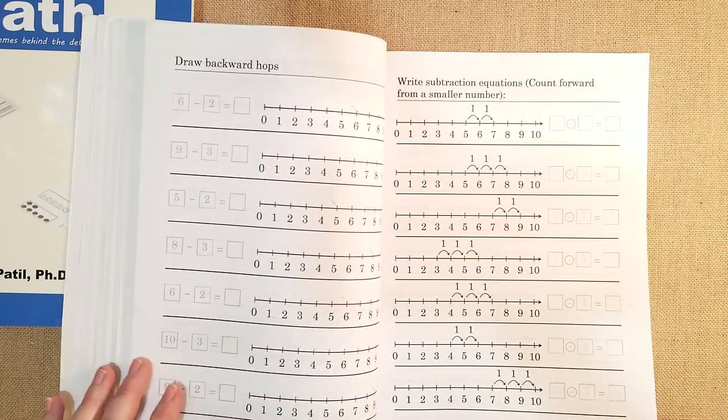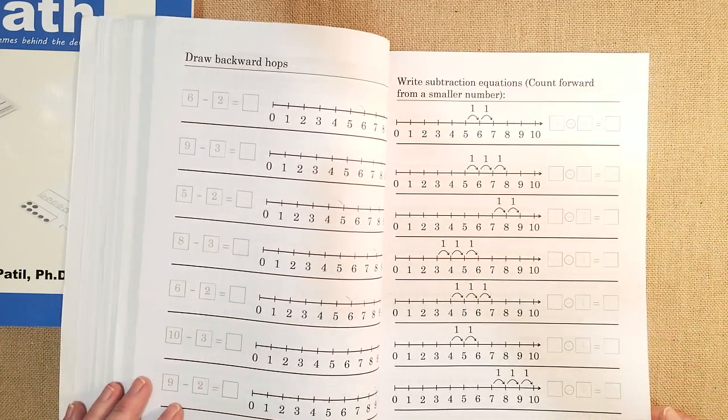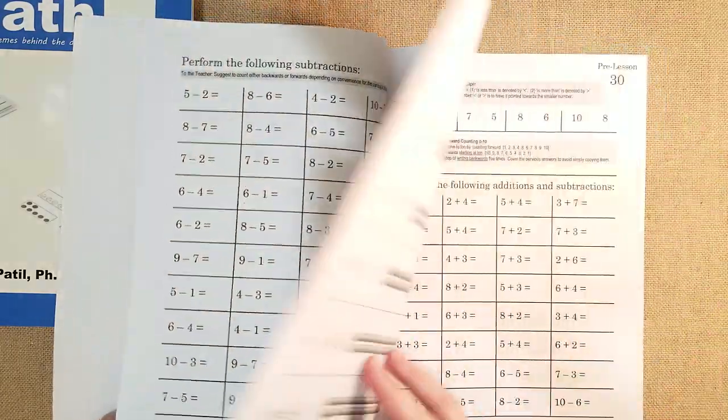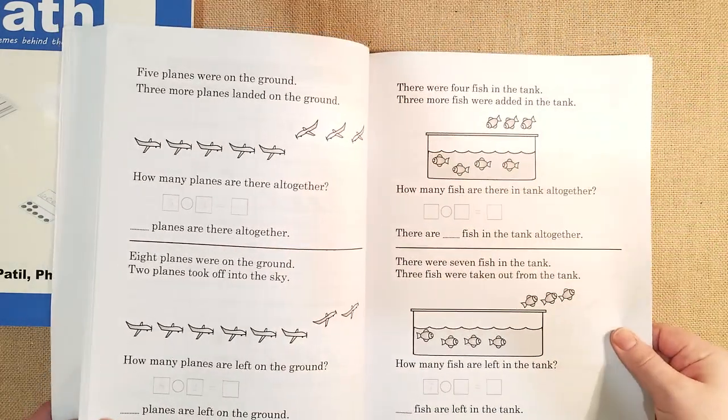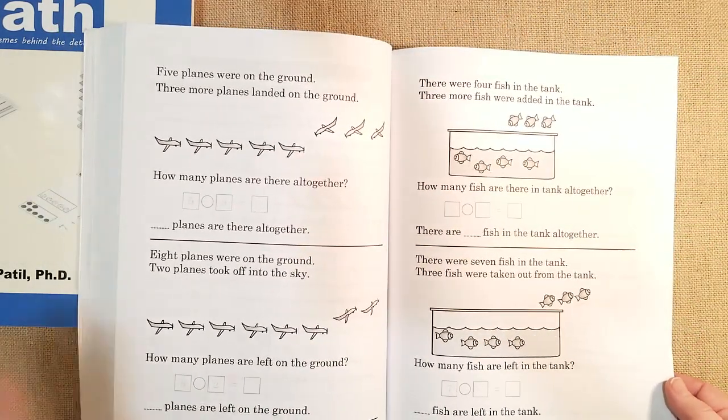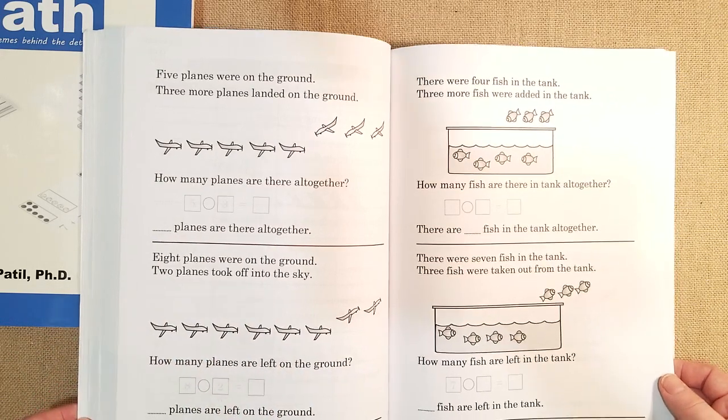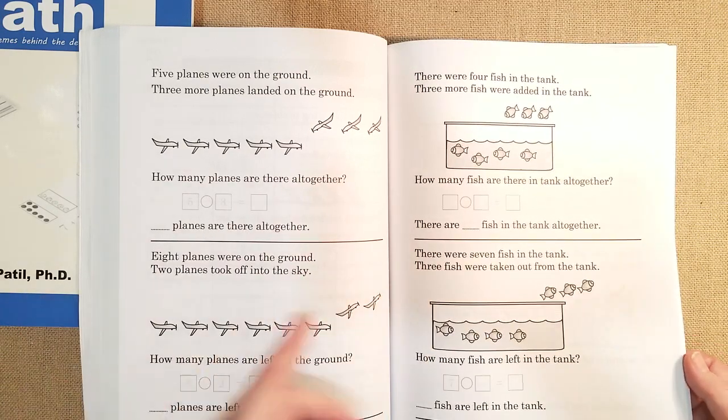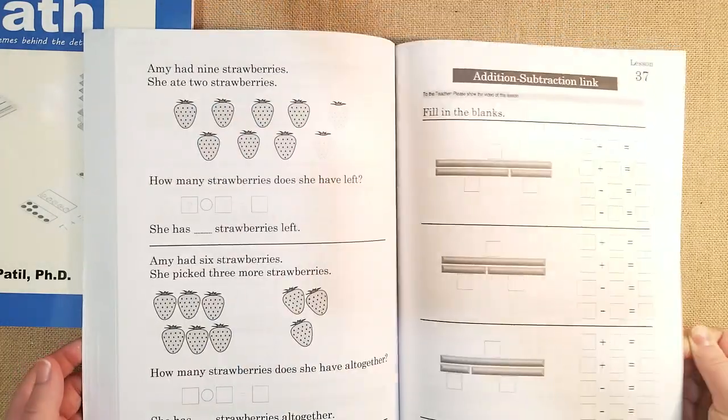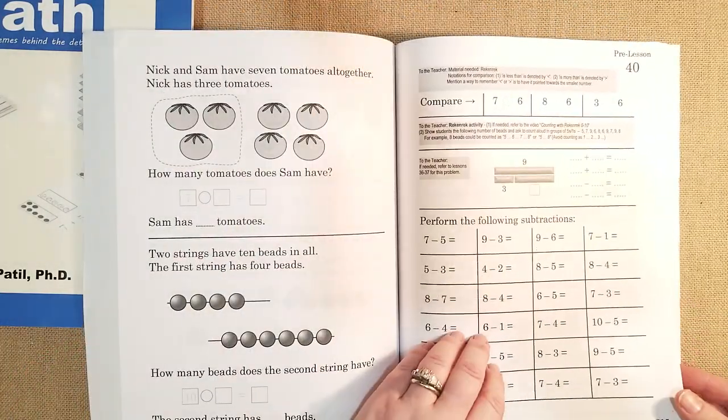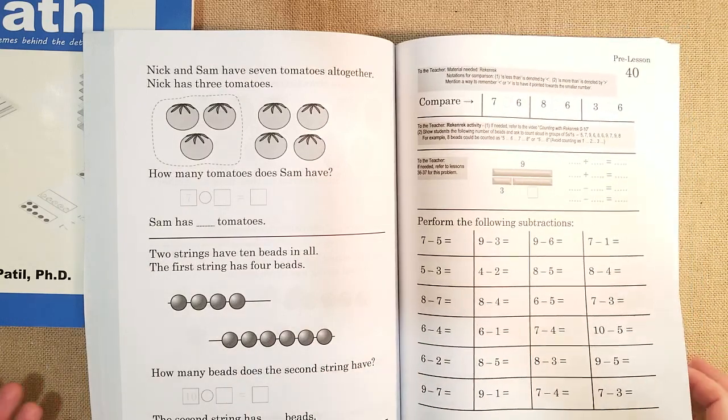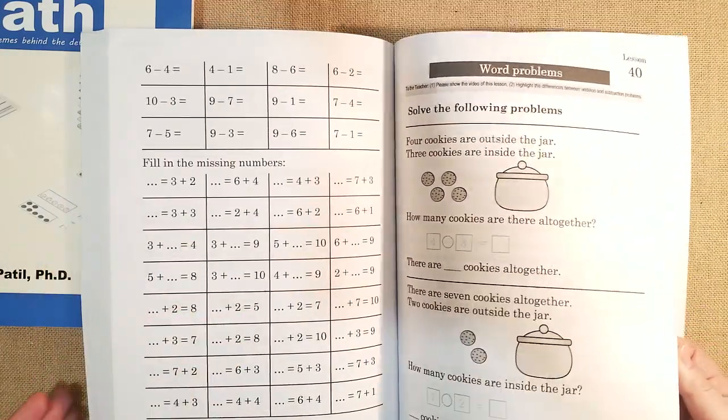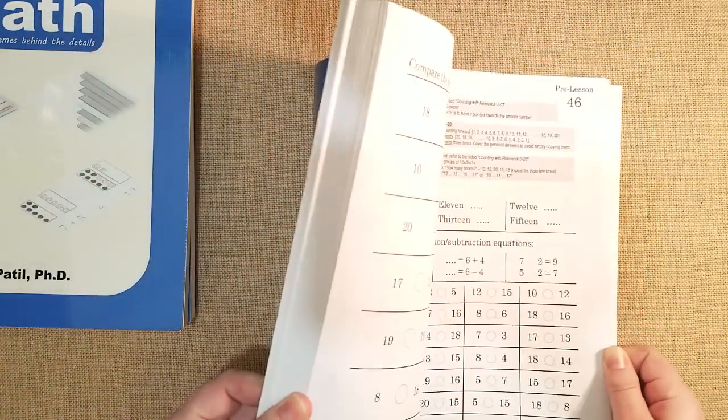Write subtraction equations, counting forward from a smaller number and I like how they have little squares and little circles for them to fill in the numbers. Some counting backwards and subtraction and so on and so forth and here are some of the word problems that they do. I like how they have little images, they're all black and white so if your kids get distracted by too much busyness on the work pages these are perfect for them. If they like color they can do these work problems and then they can color in after they're done. And then they have these little tests and pre-lessons I guess so that they know that they mastered whatever they learned prior. I did one of them with my daughter the other day and I just did it orally with her and it was very simple.